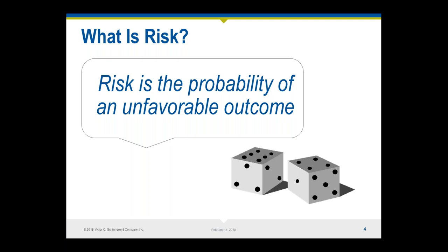The gap between expectation and outcome increases with the duration and complexity of the project, so it's a continuing effort. The second thing to think about when we talk about risk is that what's considered unfavorable to one stakeholder may be considered favorable to another. For example, lower fees paid to a design professional or reducing construction costs may equate to higher profit for your client, but it may also result in claims against the design team and contractors. That's why it's so important to have a reasonable integration of stakeholder objectives, starting with contracts that fairly allocate risk and reward.